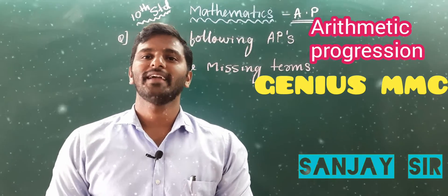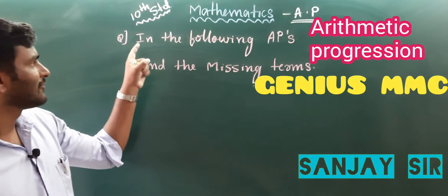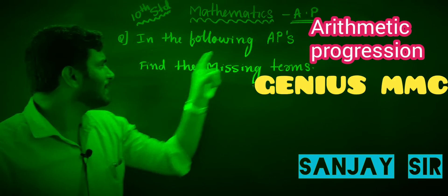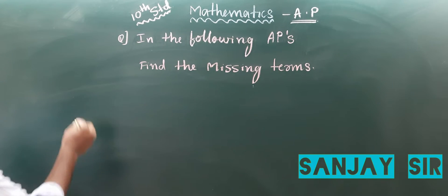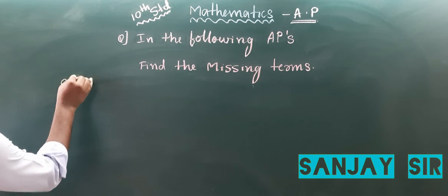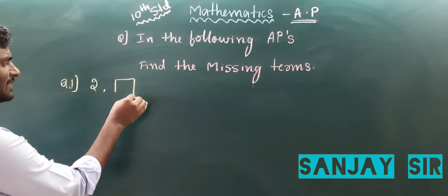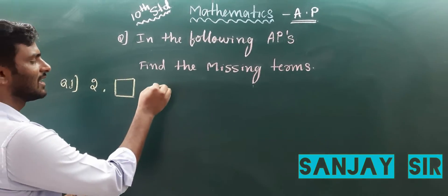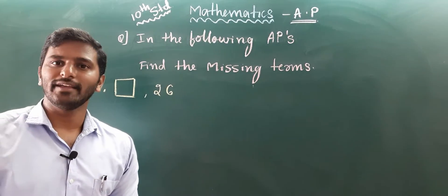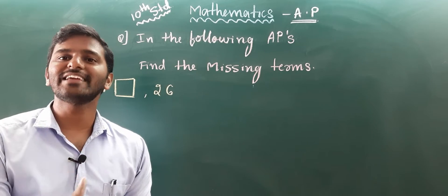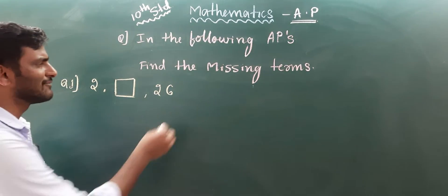Hello friends, in this session we are going to discuss about AP. The first question: in the following AP, find the missing number. The first number is 2, the second number is missing, and the third number is 26. In AP, if three finite numbers are given, there is a very easy formula to apply.